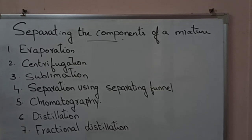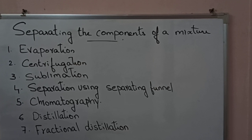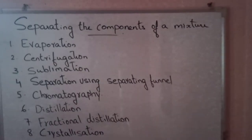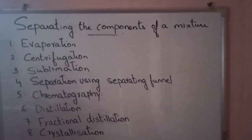Fractional distillation method is used to separate two miscible liquids having a boiling point difference of less than 25 Kelvin. For example, if liquid A boils at 20 K and liquid B boils at 30 K, the difference is only 10 K, so we use fractional distillation.